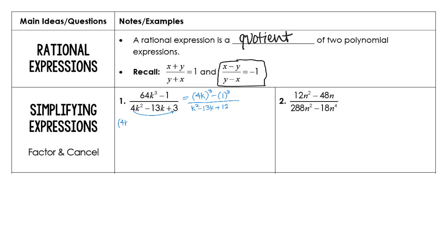In the numerator, we're going to have 4k minus 1. Remember, we would have to square, flip our sign, then multiply, then square our last term again. In the denominator, we will factor to get k minus 12 times k minus 1. Then we divide — remember it is slide and divide — so the first parenthesis is going to be k minus 3, and the second one, 1 fourth won't reduce anymore, so we move the 4 up, giving us 4k minus 1.